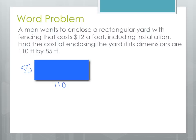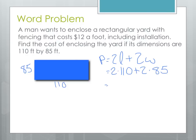Recall the formula: the perimeter of a rectangle is 2 lengths plus 2 widths. For this rectangle it's going to be 2 times 110 plus 2 times 85. We do the multiplication first: 2 times 110 is 220, plus 2 times 85 is 170. When we add those up we get 390 feet.